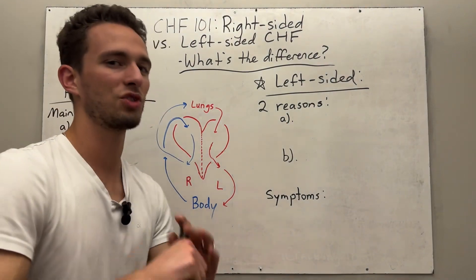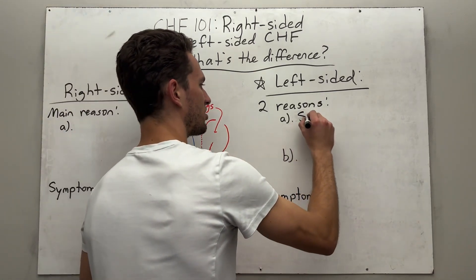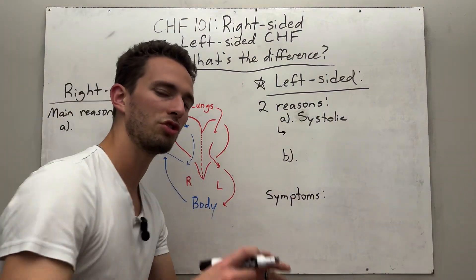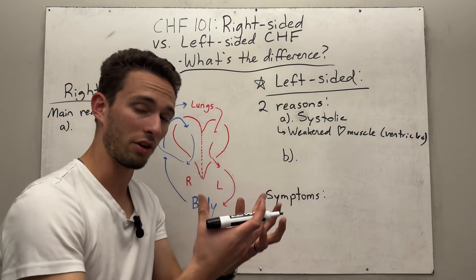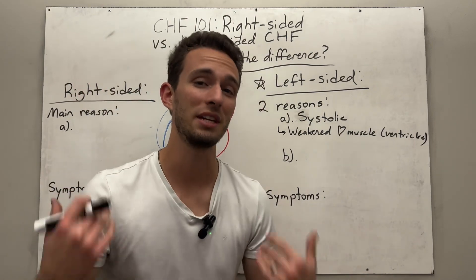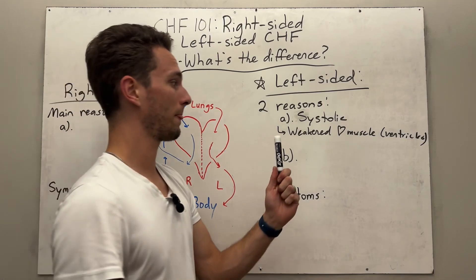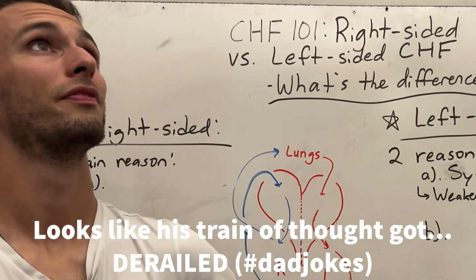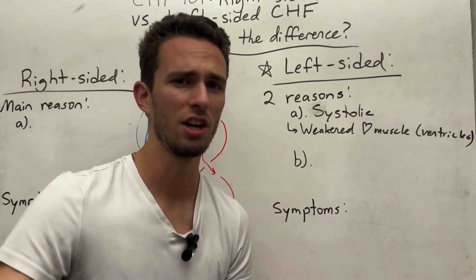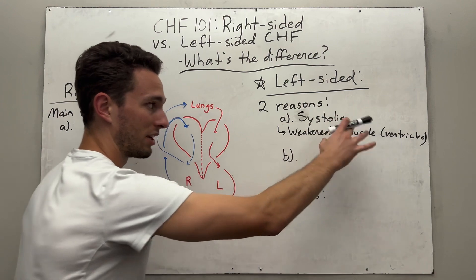There are two main reasons left-sided heart failure occurs. The first is a systolic issue — when the heart is actively contracting. This is usually due to weakened ventricular muscle, which can result from coronary artery disease or heart attacks impairing blood supply to the ventricular muscle. Or it can be due to bad heart remodeling from prolonged stress — obesity, high salt intake, low activity — reshaping the heart muscle in an inefficient way, thus weakening it.